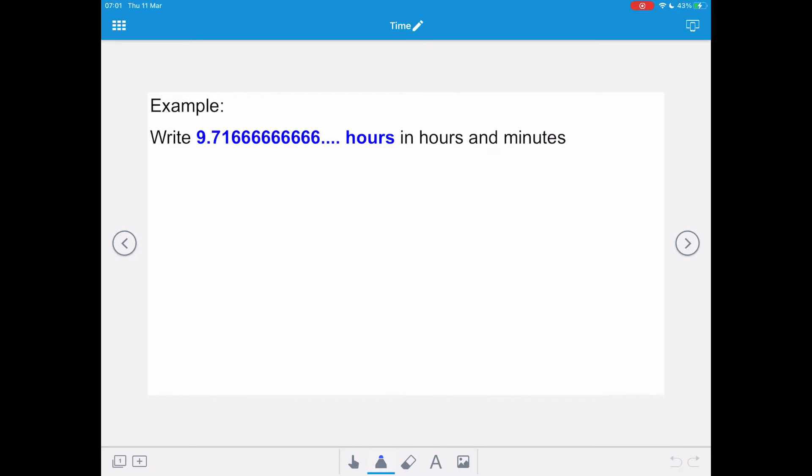In the next example we want to write 9.716 recurring hours in hours and minutes. This time we've got whole hours so we need to separate them from the decimal before we can multiply it by 60. So we've got 9 whole hours and then we're going to add on our decimal which is 0.716 recurring and we're going to multiply that decimal by 60 to change that into minutes.